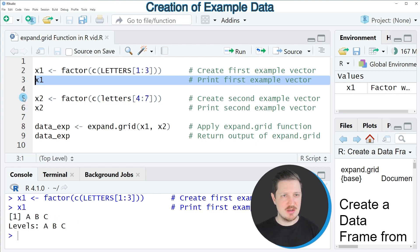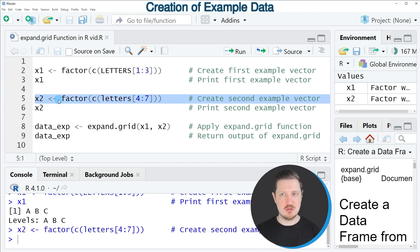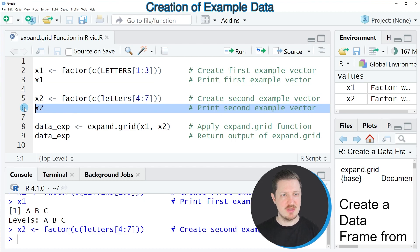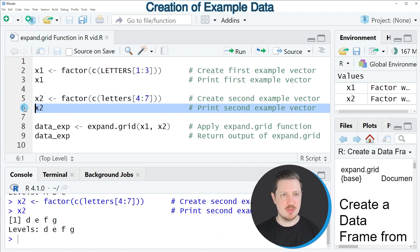In the next step, in line 5 of the code I'm creating another example data object which is called x2, and if we print this data object to the console by running line 6, you can see that this data object contains the characters D, E, F, and G.